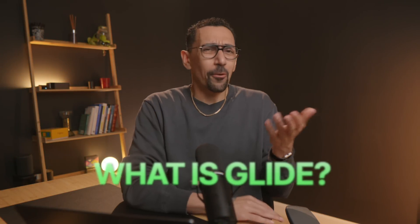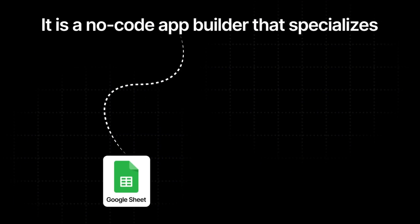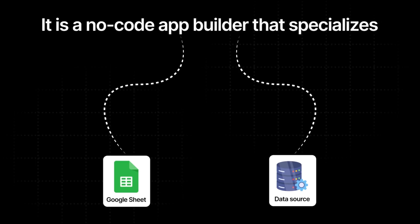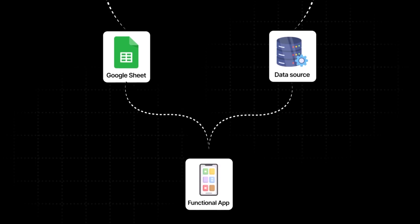So you may be asking, what is Glide? I would explain it like this: it is a no-code app builder that specializes in turning Google Sheets — or basically any kind of data source — into a beautiful, functional app. And not only that, you can update things in Glide that will update the Google Sheet, and the entire ecosystem is live and active at any given point.